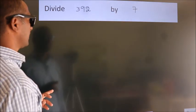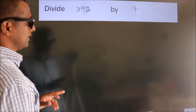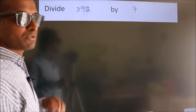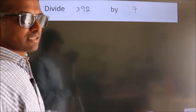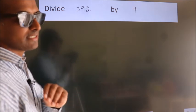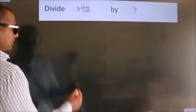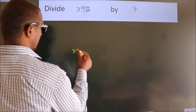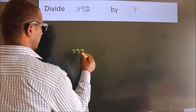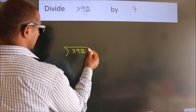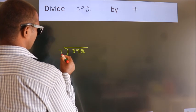Divide 392 by 7. To do this division, we should frame it in this way. 392 here, 7 here.